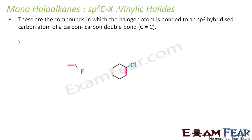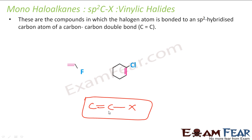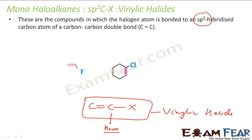The next type is vinylic halide. Here, the halogen is attached directly to a double-bonded carbon atom. The format is: C=C with the halogen on that double-bonded carbon itself. So the hero carbon is sp2 hybridized. For example, CH2=CH-Cl and similar compounds where chlorine sits on the double-bond carbon are vinylic halides.